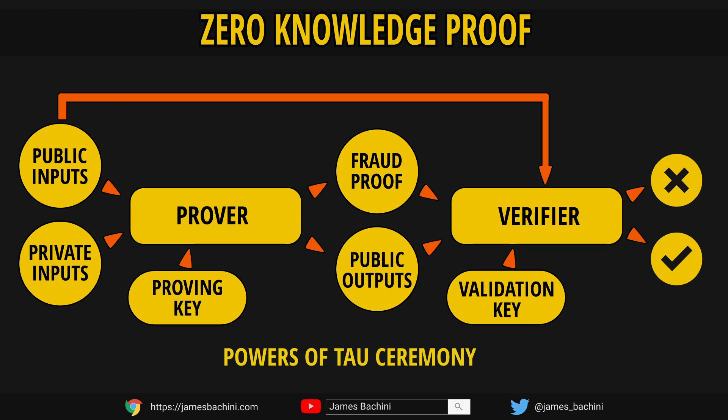The circuit may have private and public inputs. The proving key can then go ahead and create a proof using the private and public inputs. The proof alongside the public outputs and the public inputs are sent to the verifier, and their validation key can assert whether this verification is true or false.